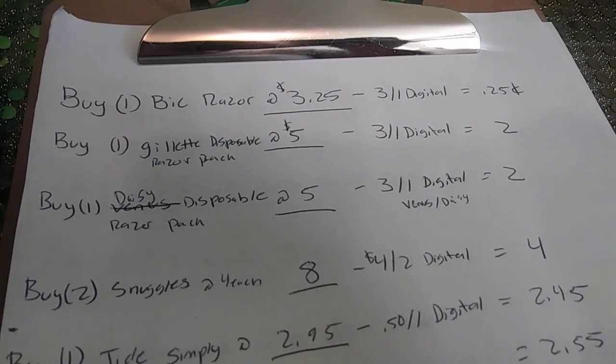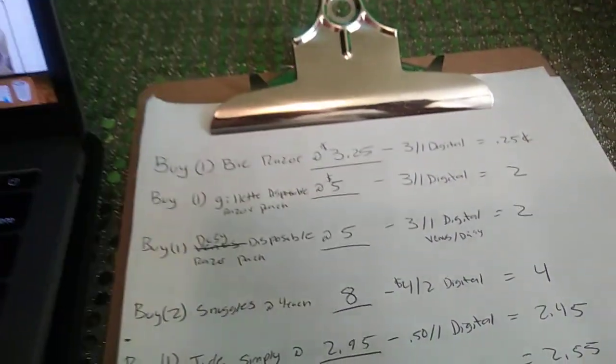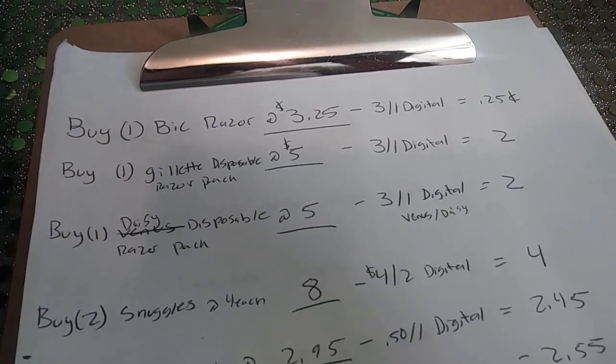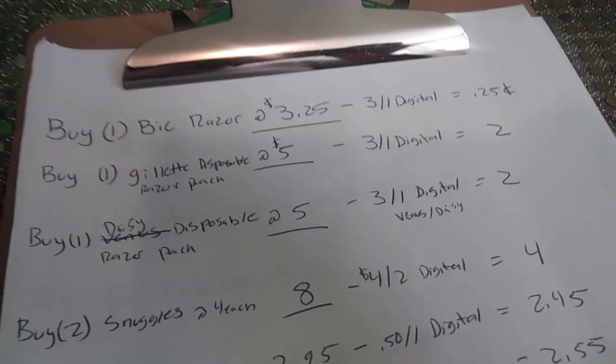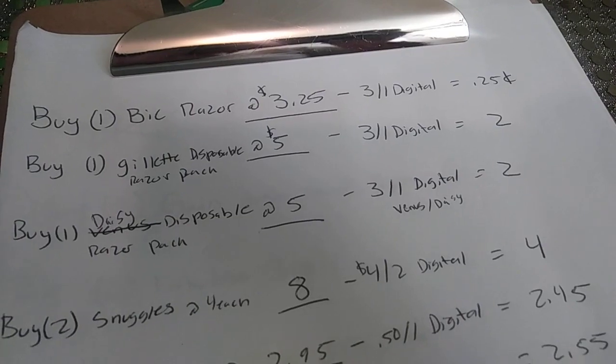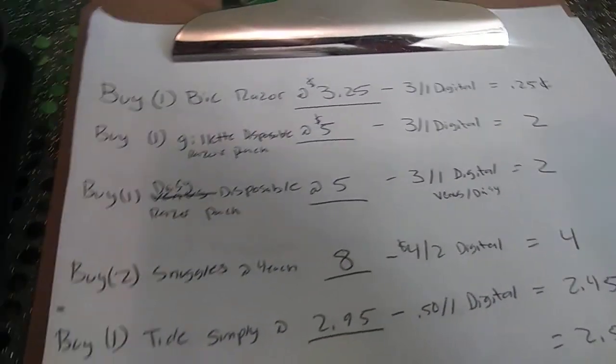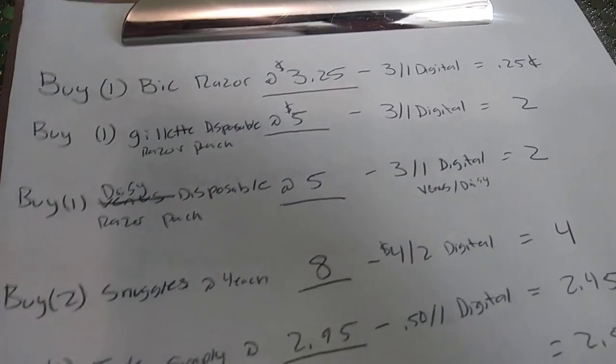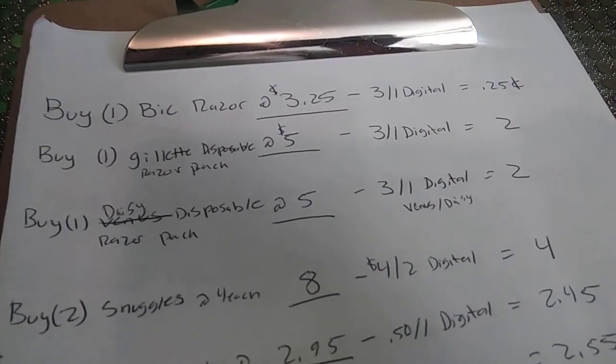Then you would also want to grab the Daisy pack, so that's this one at $5. And there's a $3 off one digital coupon for Venus or Daisy razors as long as they're disposable and it excludes the two count. So these ones are a five count. So this will definitely work with that coupon. I've done this one before. So it'll make it just $2.